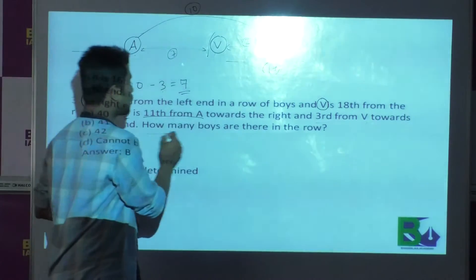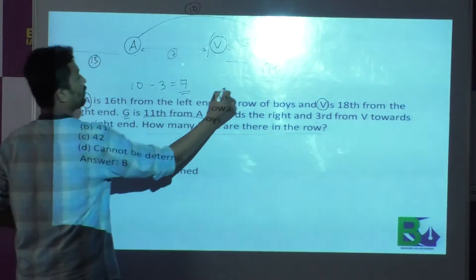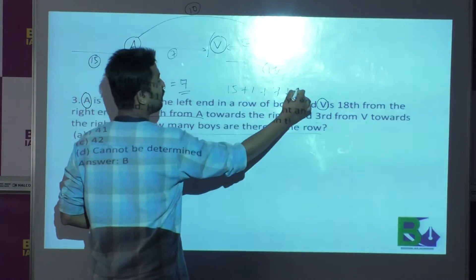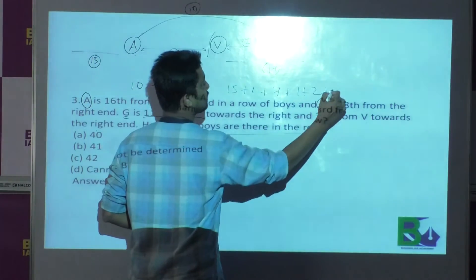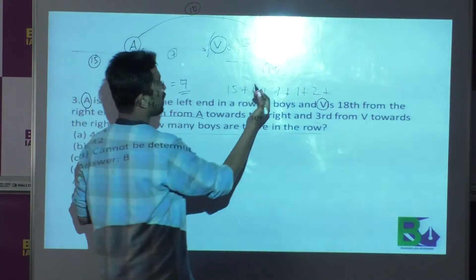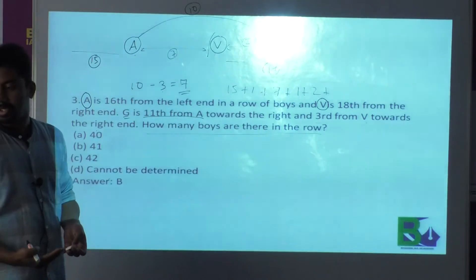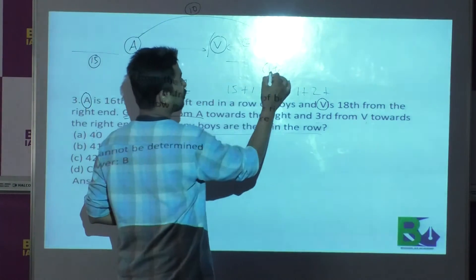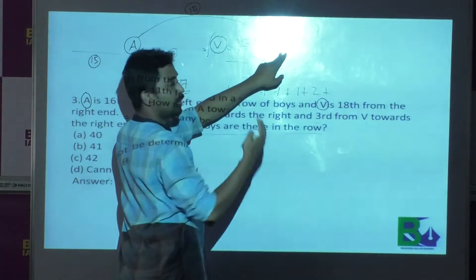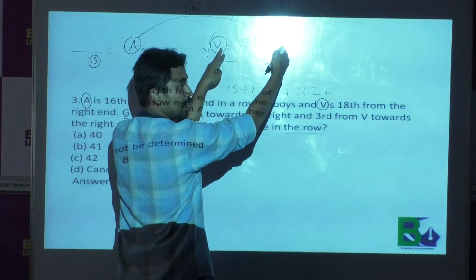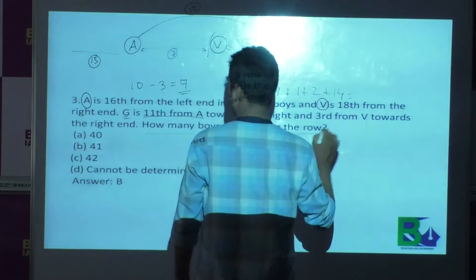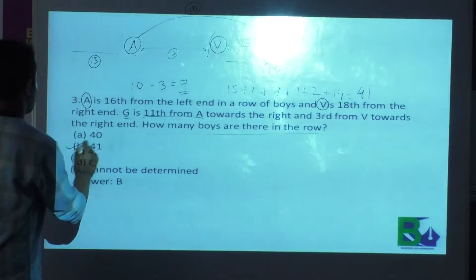Now we have to find out the total number of persons. From the left, there are 15 persons before A. Then A is there. In between A and V there are 7 persons. Then V is 1. Between V and Z is 2, then Z. Total from V's side is 17, and up to Z that is 3, so after Z there are 14 persons. Adding all: 15 + 1 + 7 + 1 + 2 + 1 + 14 = 41. The correct answer is option B: 41.